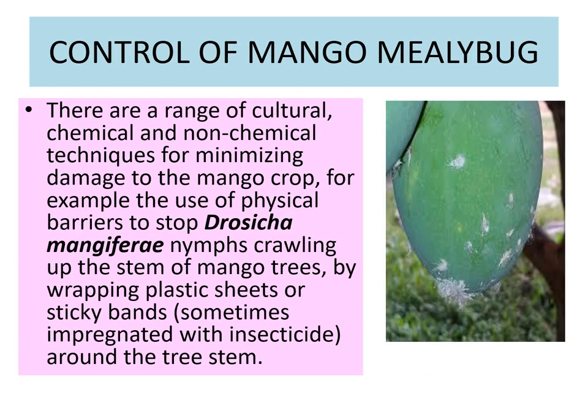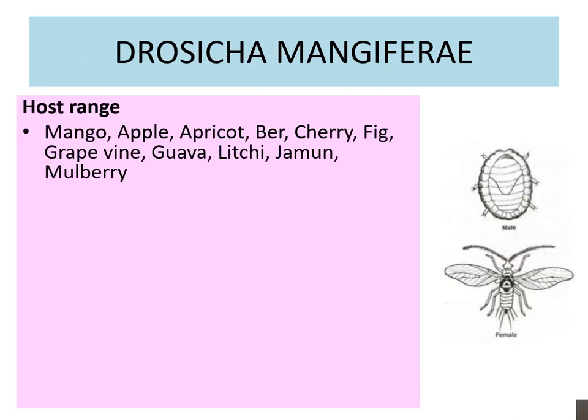Control measures: there are a range of cultural, chemical, and non-chemical techniques for minimizing the damage to the mango crop. For example, the use of a physical barrier to stop Drosica mangiferae nymphs crawling up the stem of mango trees by wrapping plastic sheets around the tree trunks, or sticky bands sometimes impregnated with insecticide around the tree stems. That will stop the movement of the nymphs from the soil to the shoots.